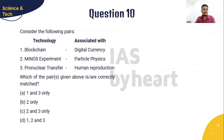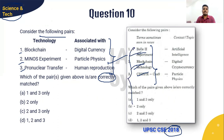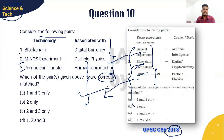Question 10 is from science and technology: Consider the following pairs of technologies and their associated applications. Three technologies are given and we should find the correctly matched pairs. This question has been inspired from the 2018 question paper, where a question about blockchain technology and CRISPR-Cas9 was asked. I will give you 10 seconds to answer this question.